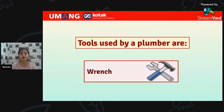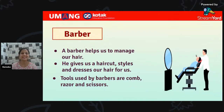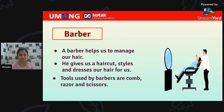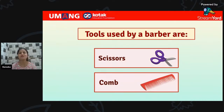The next person is very important because it is related to our hair — they dress our hair. The person is Barber. A barber helps us to manage our hair; he gives us a haircut, styles, and dresses our hair. The tools used by barbers are comb, razor, and scissors. Write scissors and comb in the chat box.